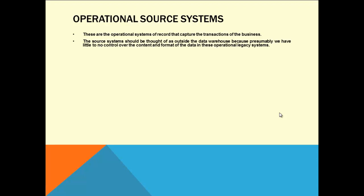The source system should be thought of as outside the data warehouse because presumably we have little to no control over the content and format of data in these operational legacy systems. You cannot modify a source — you are a data warehouse engineer, you don't have command over that. You cannot touch the source systems. All you can do is extract the data. You cannot ask the source team to change their data. In general, they will say: this is how it is — plan your data warehouse and move the data properly.